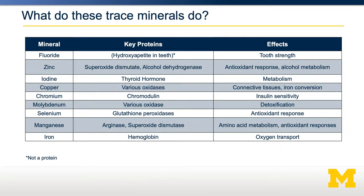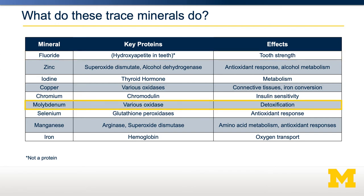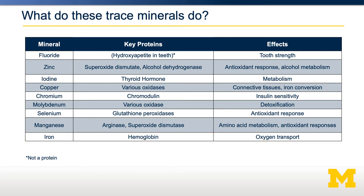So what do these trace minerals do? These are the minor minerals, required generally in microgram to milligram amounts per day. Shown here is a list of the minerals and some of the key proteins and effects they have. For example, fluoride is important for the deposition of hydroxyapatite in the teeth and is associated with tooth strength. Molybdenum is required for the activity of various enzyme oxidases, which are important for detoxification processes, among other things. Iron is required in hemoglobin and is critical for oxygen transport throughout the body. Knowing what these minerals are and what their key proteins are helps you understand the key effects. Pause the video for a moment and try to get a sense of how a particular mineral, associated with a particular protein, affects a biological process.